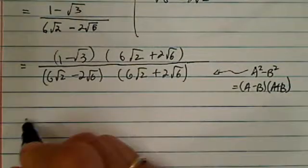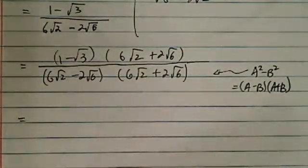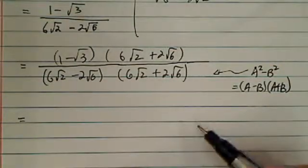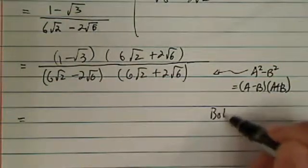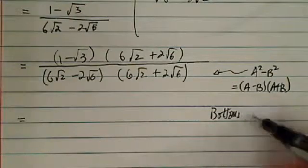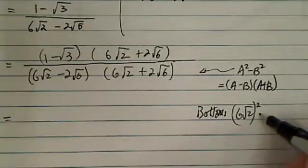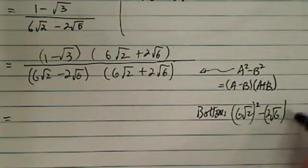Let's do the bottom here. Since this is a minus b, a plus b, the cross term cancels out. So let's take the bottom over here, and then we have 6 radical 2 squared minus 2 radical 6 squared.